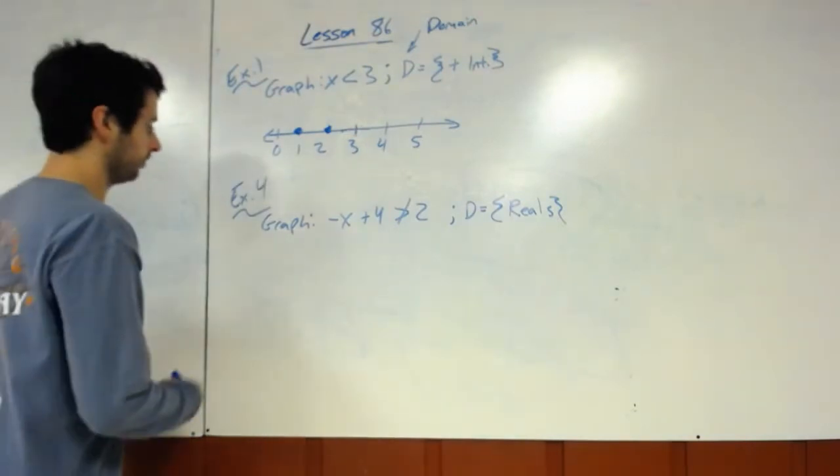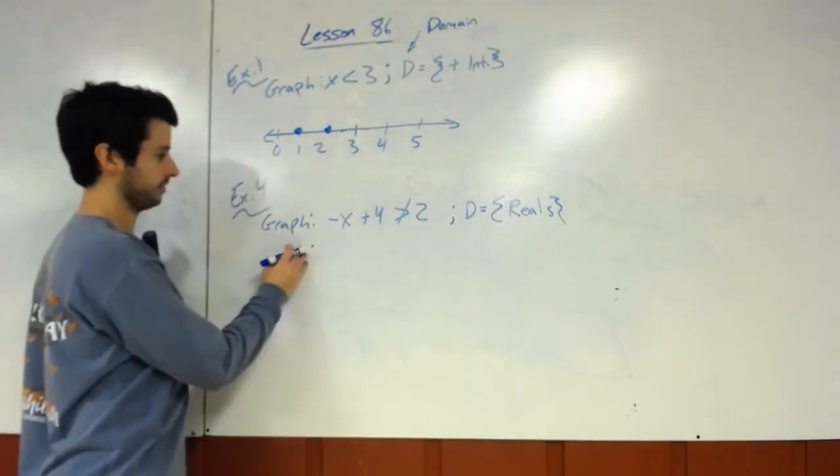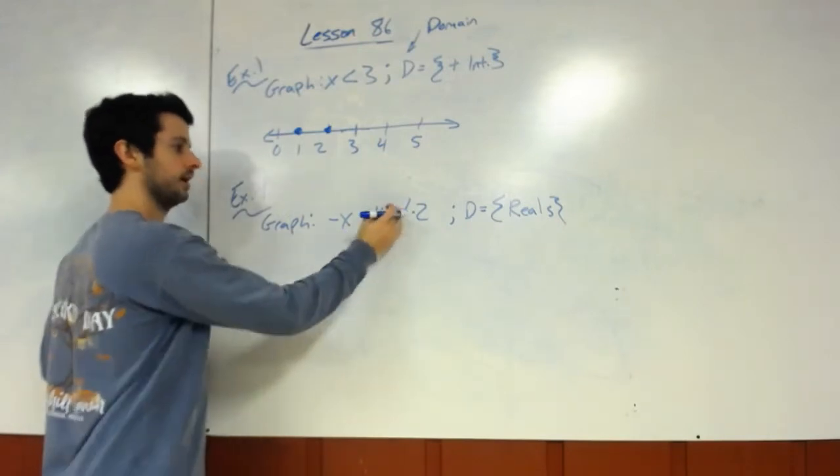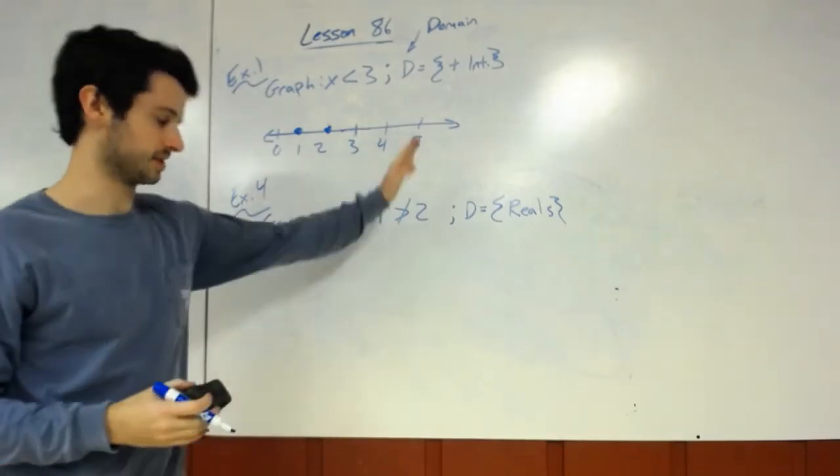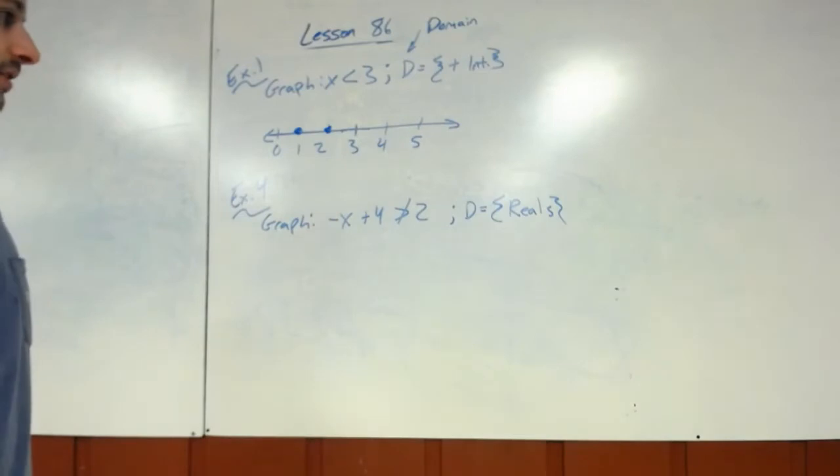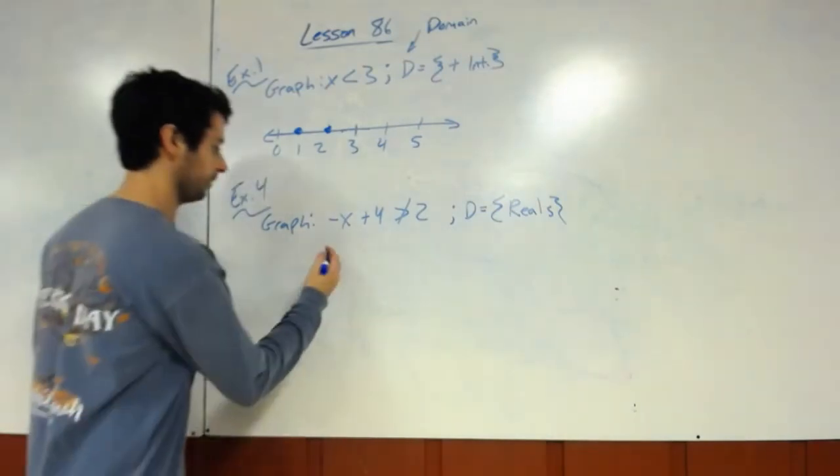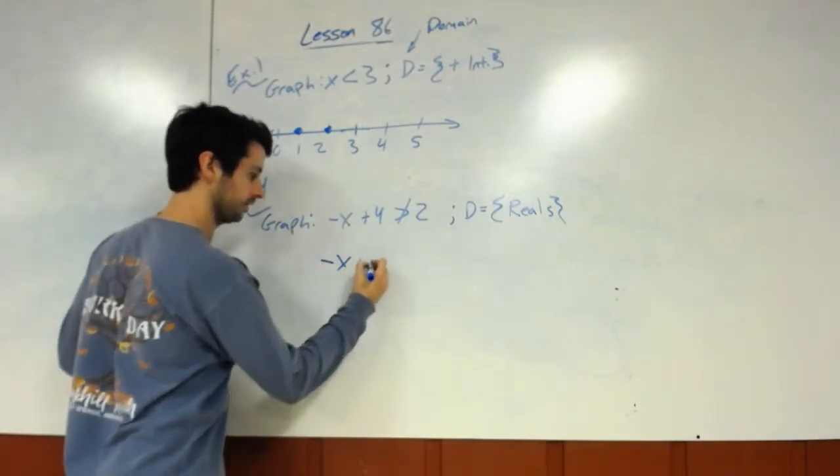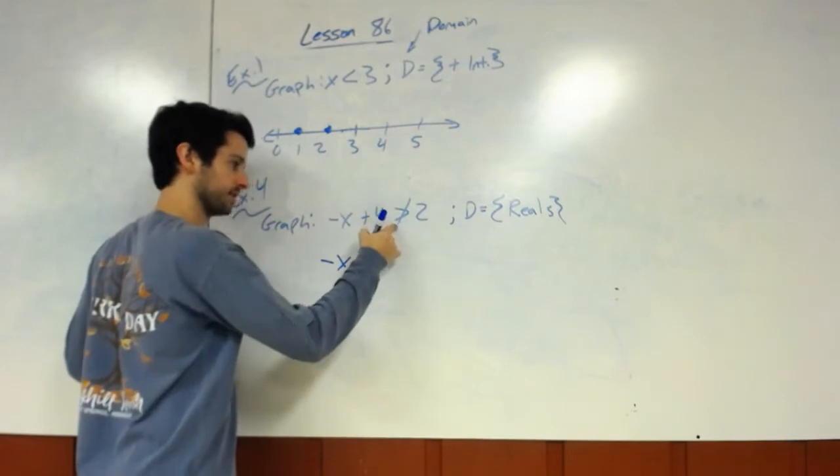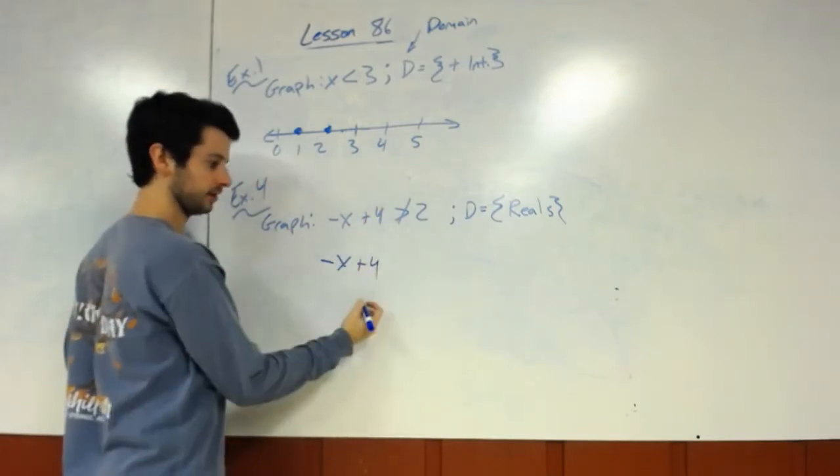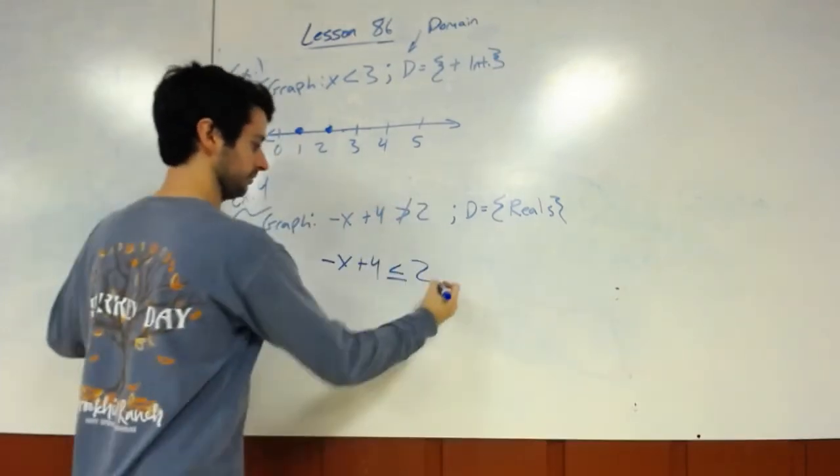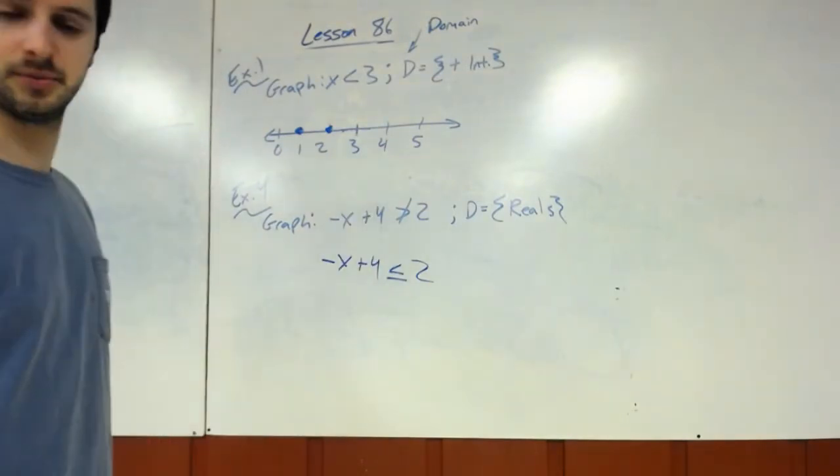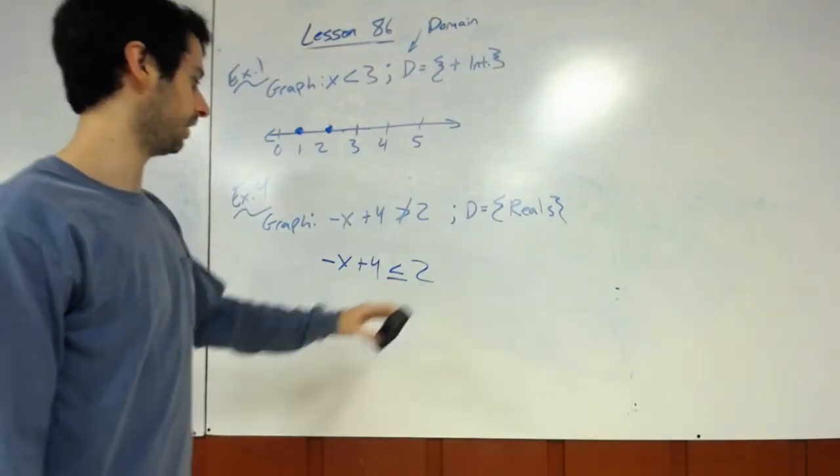Now let's look at one more graphing problem. Example 4, it says graph negative x plus 4 is not greater than 2. That's what this sign means. Anytime you see the slash through an inequality sign, that means it is not whatever. So when that happens, what we need to do is start by rewriting the problem and changing this to the opposite. So the opposite of greater than would be less than or equal to. So you've got to do the opposite. That's all you do when you see that slash. You completely change it.